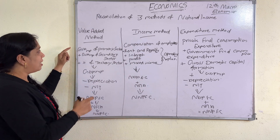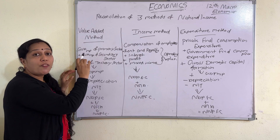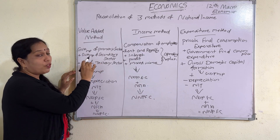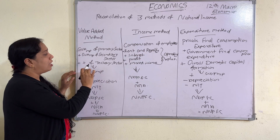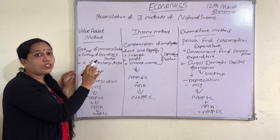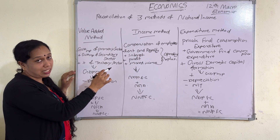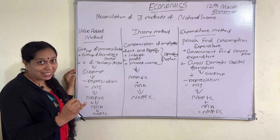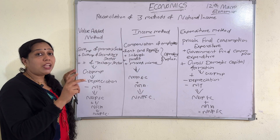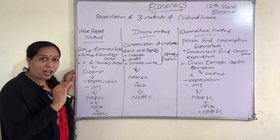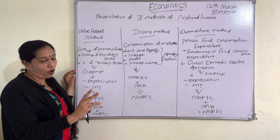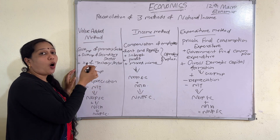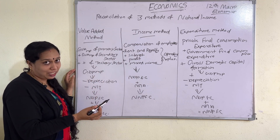The value-added method formula uses GVA: gross value-added at market price of the primary sector, plus gross value-added at market price of the secondary sector, plus gross value-added at market price of the service sector (tertiary sector). By adding the gross value-added at market price of these three sectors of the economy, you will get GDP at market price (GDPMP).